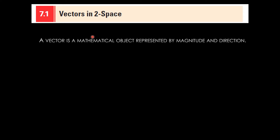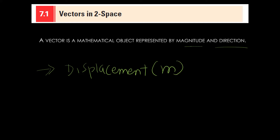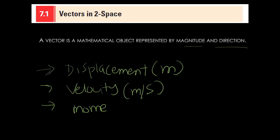Let's start with 7.1, which is vectors in two spaces. So what is a vector? A vector is a mathematical object represented by magnitude and direction. Some examples of vectors are: displacement, measured in meters; velocity, measured in meters per second; and moment of force, measured in newtons per meter.